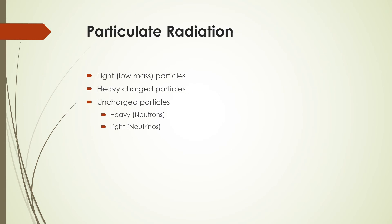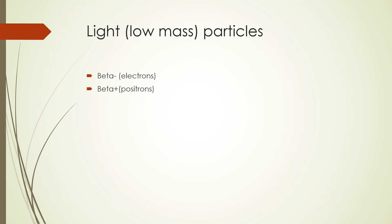We are done with electromagnetic radiation and we shall now turn our attention to particulate radiation. Particulate radiation consists of light or low mass particles, heavy charged particles, and uncharged heavy particles like neutrons and light particles like neutrinos. Examples of low mass particles are beta minus particles, which are like electrons, and beta plus particles, like positrons. Let's look at the beta minus particles next.